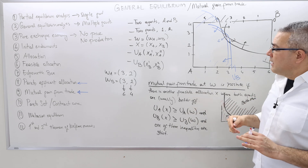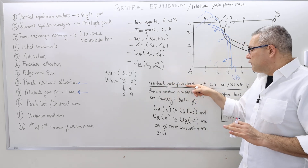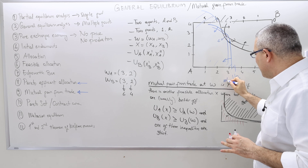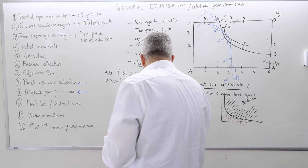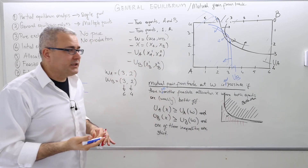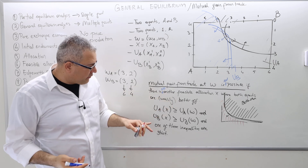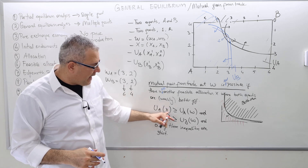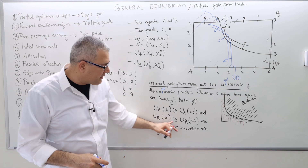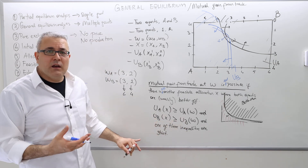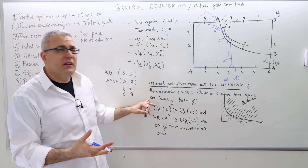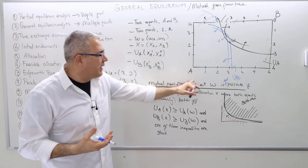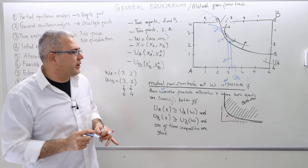What about when mutual gain from trade at W is not possible? It means there is no other feasible allocation X where both agents are weakly better off — meaning there is no X where U_A(X) ≥ U_A(W) and U_B(X) ≥ U_B(W) with at least one inequality strict. This condition can't be true for any feasible X. There's no such thing.